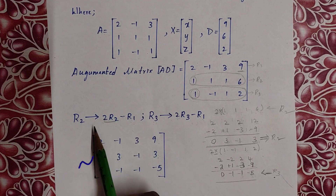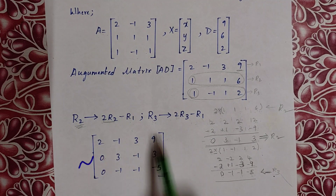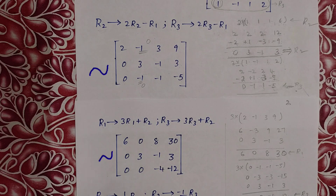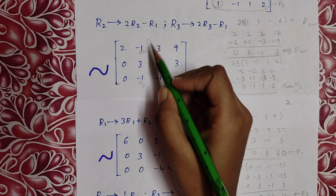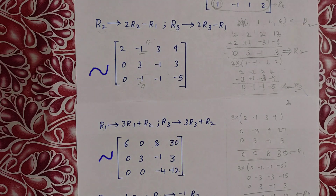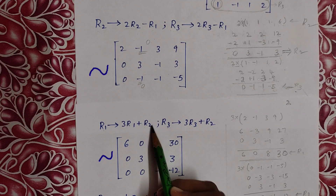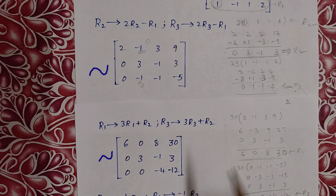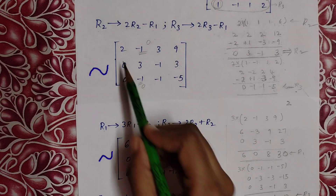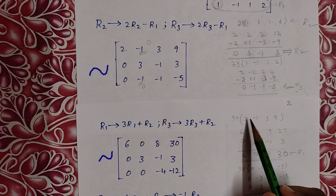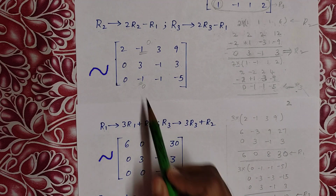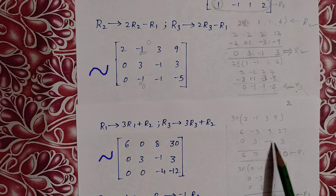R1 doesn't change because we performed R2 and R3 operations. R1 values remain the same. To eliminate the -1 entry and make it 0, we perform R1 turns to 3R1 plus R2. Computing 3 into R1: [2, -1, 3 | 9] × 3 gives [6, -3, 9 | 27]. Adding R2 [0, 3, -1 | 3] gives [6, 0, 8 | 30].